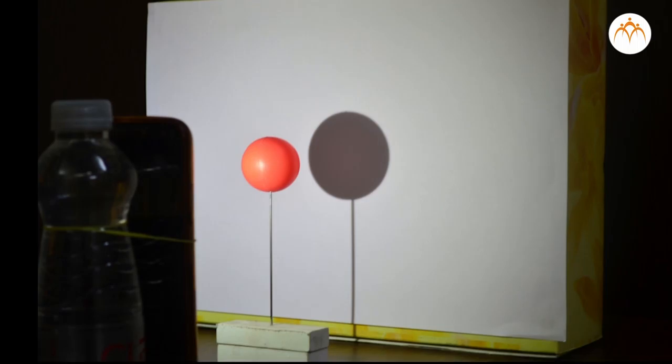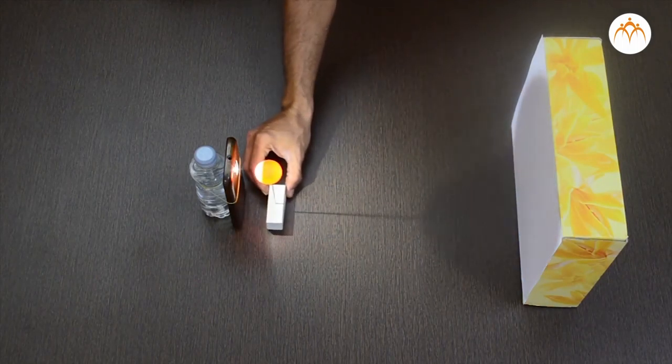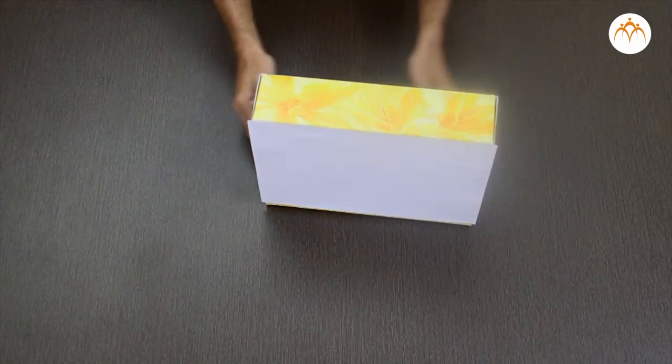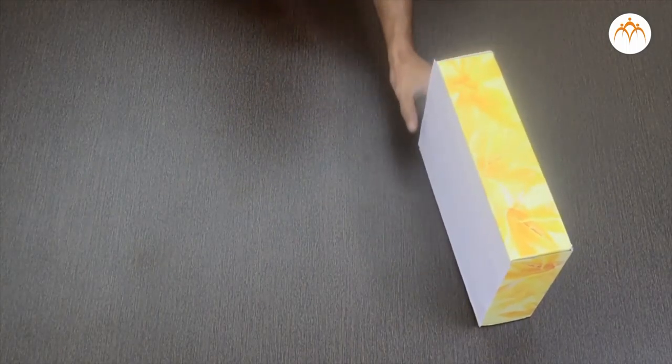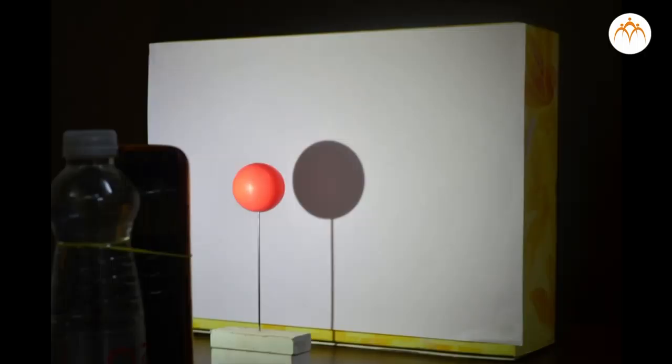We will shift the light source sideways. The shadow of the ball changes from circle to ellipse. The shape of the shadow depends on the direction of light falling on it. Let's take this plastic ball. I will place it on this needle stand so that I can move this near the light source or the screen.